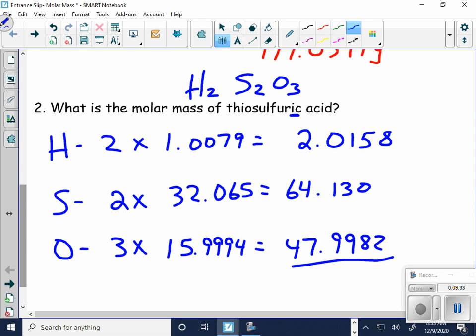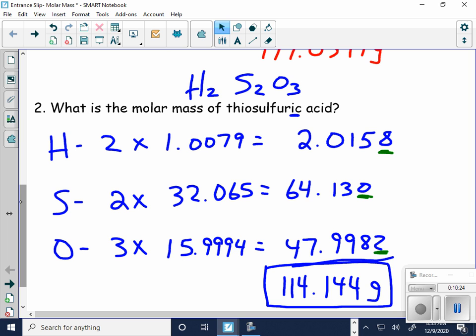I add them up together and I get 114.144. Since I'm doing addition, there's three places past the decimal, four places, three places. So I should have my answer three places past the decimal, which I do have. So my answer is going to be 114.144.